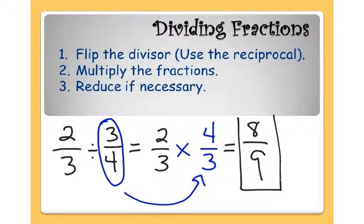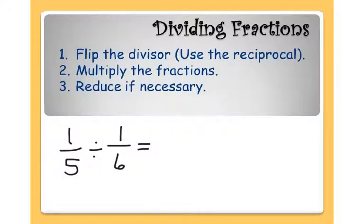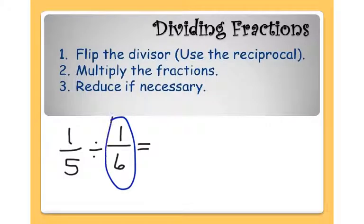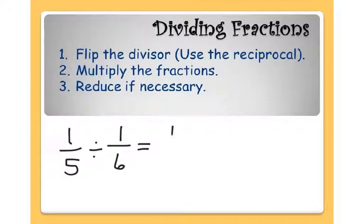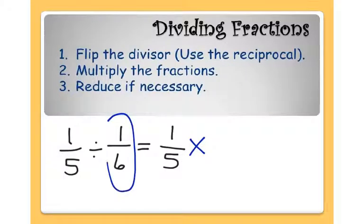Here we have 1 fifth divided by 1 sixth. We need to turn that division problem into a multiplication problem, and we do that by flipping the divisor. The divisor is what we're dividing by — that's 1 sixth in this example. So I turn it into a multiplication problem: I rewrite my 1 fifth, and now instead of dividing, we're going to multiply by the flipped version of 1 sixth.